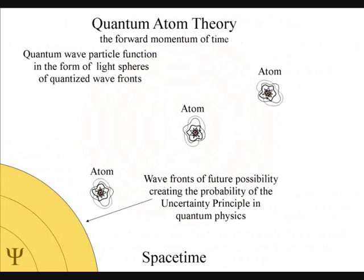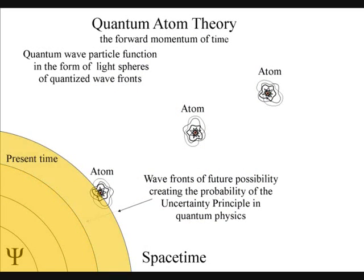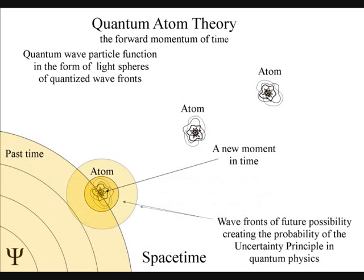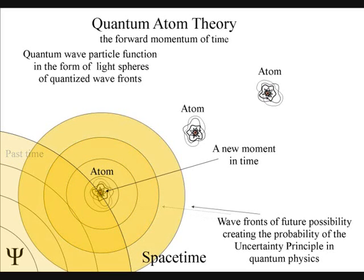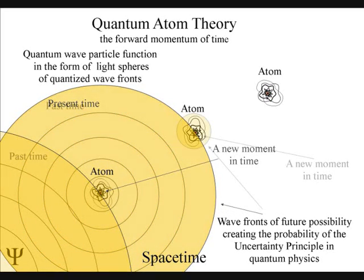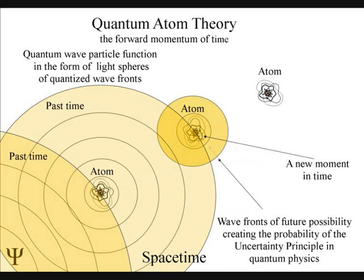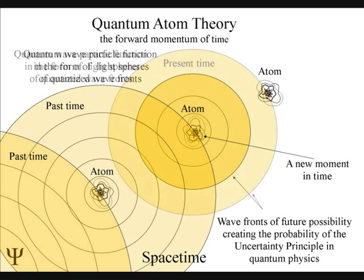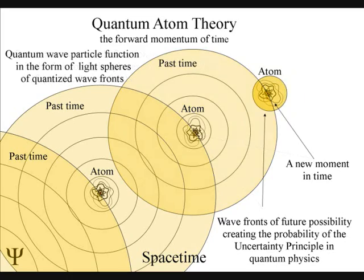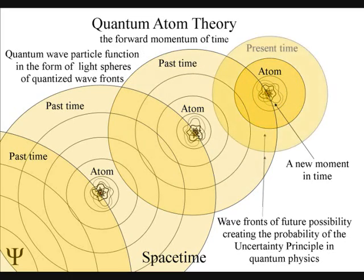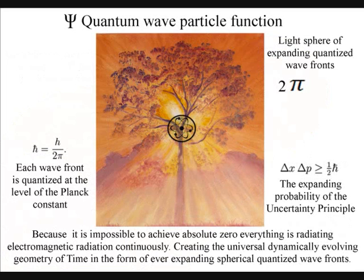In this theory, the emission and absorption of electromagnetic radiation from one atom to another creates the forward motion of time. Each individual atom of our universe creates its own spacetime geometry relative to its position and momentum. Light moves in straight lines, but in three-dimensional space, it will expand out in all directions.